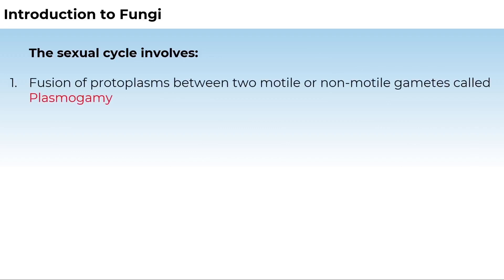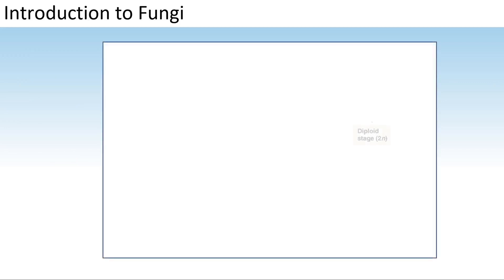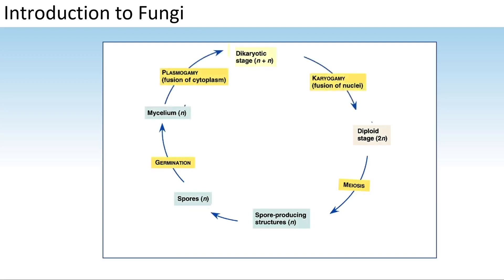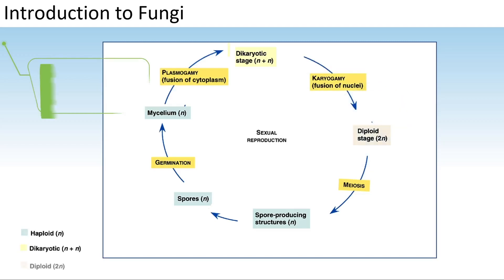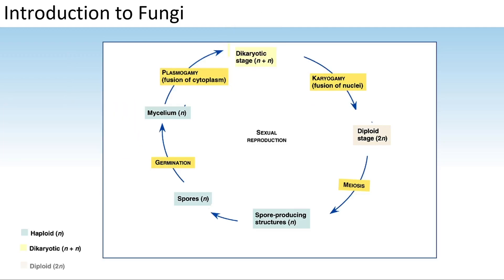The sexual cycle in fungi involves three steps: fusion of protoplasms between two gametes called plasmogamy; fusion of two nuclei called karyogamy; and meiosis in the zygote resulting in haploid spores. In some fungi, fusion of two haploid cells immediately results in diploid cells (2N). However, in ascomycetes and basidiomycetes, an intervening dikaryotic stage (N+N, two nuclei per cell) occurs — called the dikaryophase. Later, the parental nuclei fuse and cells become diploid, and fungi form fruiting bodies in which reduction division leads to haploid spores.